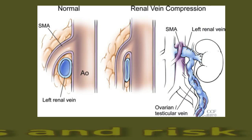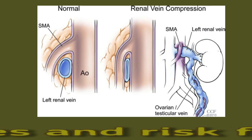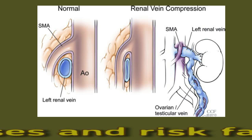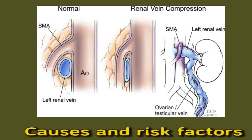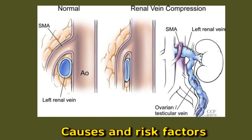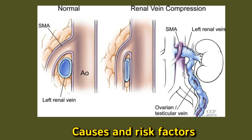Nutcracker syndrome occurs as a result of compression of the left renal vein. Conditions that can lead to left renal vein compression include anatomic irregularities such as a small pelvis or an unusually shaped aorta, injury, tumors, and aneurysm in the abdominal aorta, as well as pregnancy. Nutcracker syndrome can affect people of any age or sex, but is more common among females in their 30s and 40s.